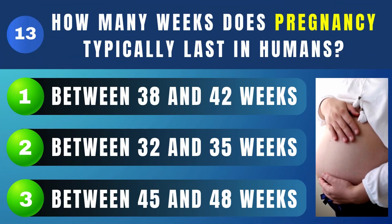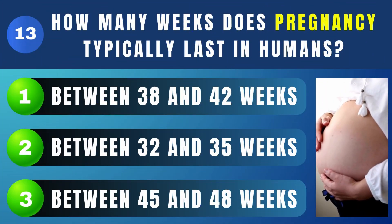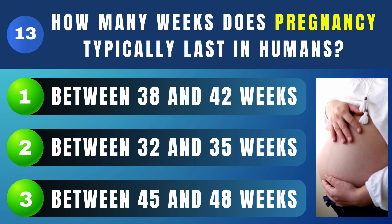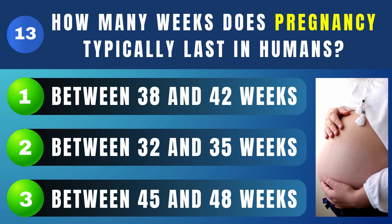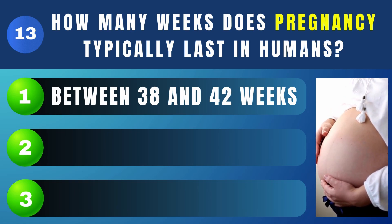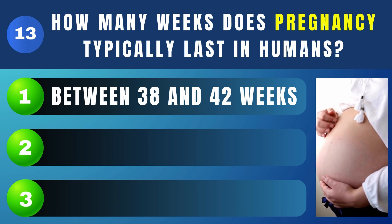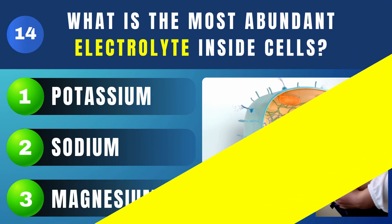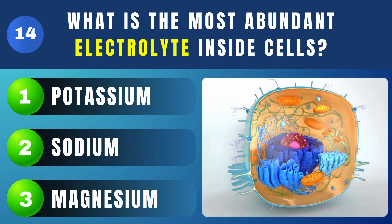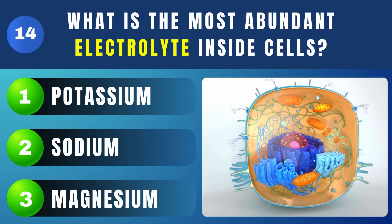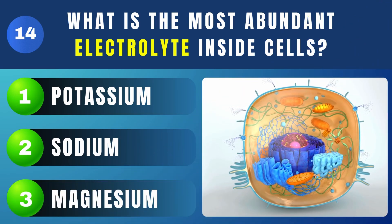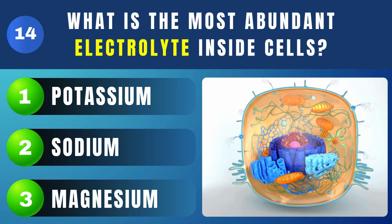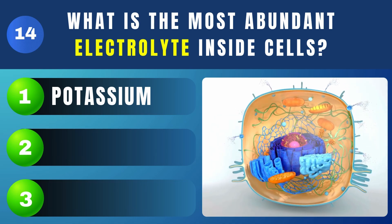How many weeks does pregnancy typically last in humans? Between 38 and 42 weeks. What is the most abundant electrolyte inside cells? Potassium.